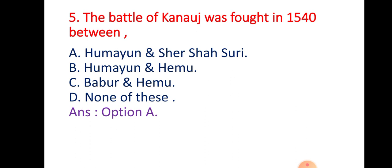Question 5: The Battle of Kanuj was fought in 1540 between — Option A: Humayun and Shersha Suri; Option B: Humayun and Himu; Option C: Babar and Himu; Option D: None of these. The right answer is Option A — Humayun and Shersha Suri, the Afghan rebel.